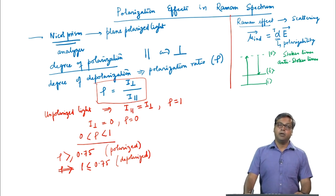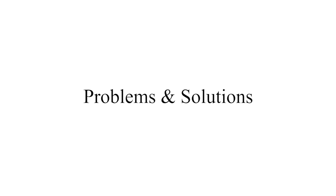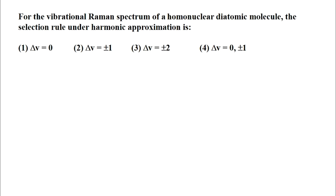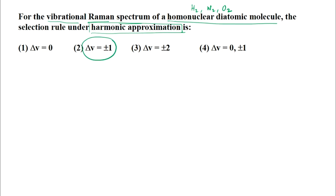We will end this lecture by solving a few problems. The first problem is a multiple choice question: for a vibrational Raman spectrum of a homonuclear diatomic molecule such as hydrogen, nitrogen, or oxygen, the selection rule under the harmonic approximation is delta-V equals plus or minus 1. As discussed in the last lecture, the selection rule is the same for IR and Raman for vibrational transitions. The other three options are not correct; the correct option is delta-V equals plus or minus 1.